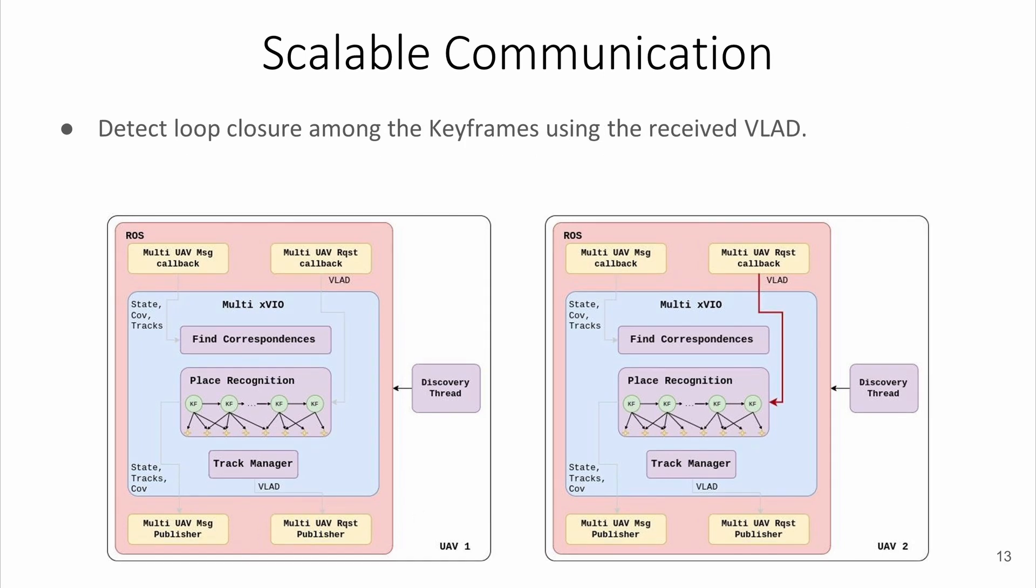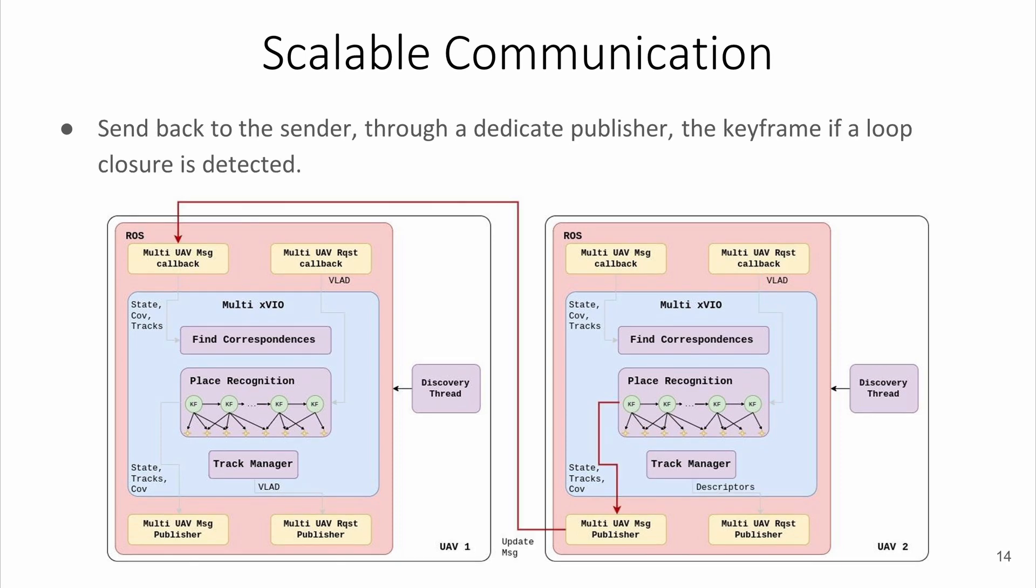Once an agent receives the VLAD, it checks in the history of its keyframes if there is a similar descriptor. If so, it retrieves the state, the covariance, and the tracks at that keyframe and sends them back to the drone that has sent the request.